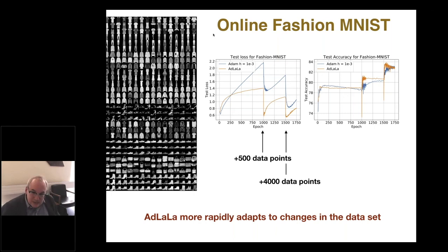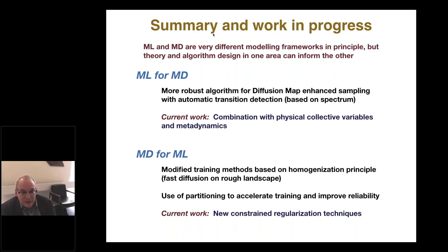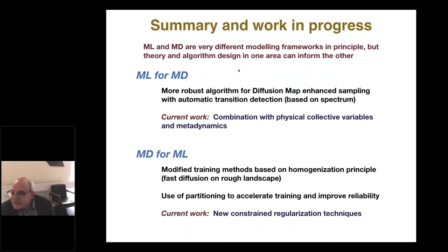In summary, I've shown examples of how we're using machine learning methods to improve molecular dynamics sampling, and also molecular dynamics algorithms in machine learning to accelerate things. We have lots of ideas for extending these. In particular, for the MD-for-ML direction, we're looking at new constrained regularization techniques using ideas from molecular dynamics — including geodesic integrators — to enhance the properties of learned models in machine learning. Thank you for your attention.